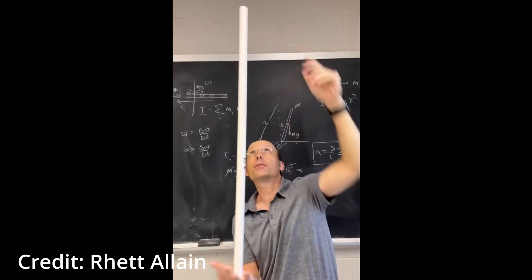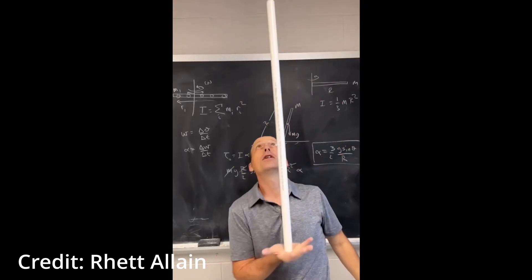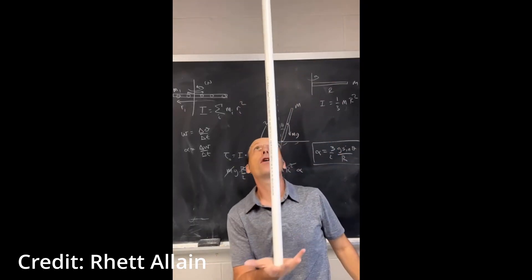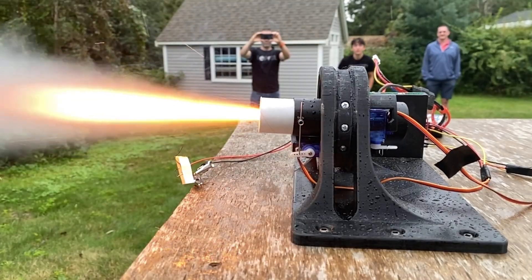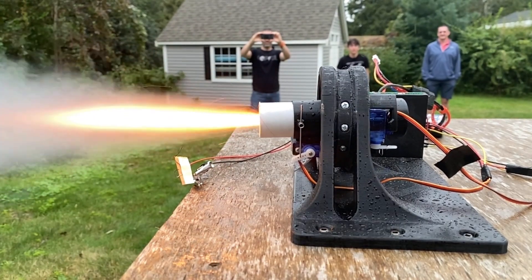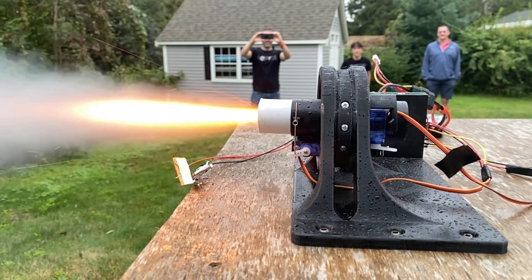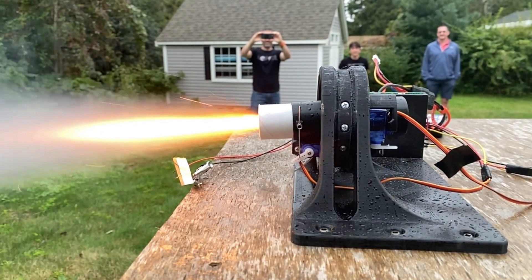If you're not familiar with thrust vector control, you can imagine trying to balance a stick on your hand. To keep it upright, you have to move your hand around. Thrust vector control is a similar concept, except instead of moving your hand, you're moving the thrust of a rocket in order to keep it pointed in the desired direction.